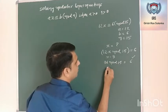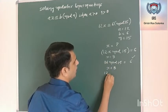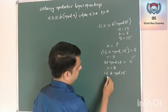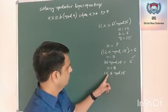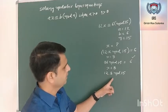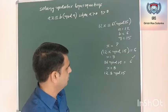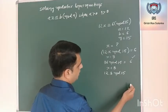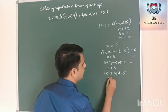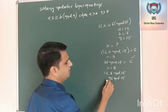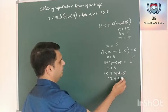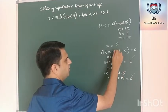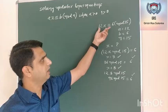Let me have one more value. Let me assume that X is equal to 8. What happens is 12 into 8 mod 15. 12 into 8 is 96. 96 mod 15 — 15 times 6 is 90, remainder is 6, so this is also 6. So one value of X is 3 and the other value of X is equal to 8 for this particular equation.